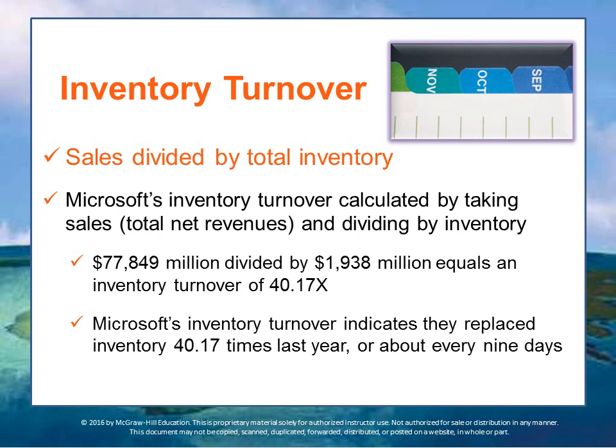Inventory turnover is sales divided by total inventory. This indicates how many times a firm sells and replaces its inventory over the course of a year. A high inventory turnover ratio may indicate great efficiency, but may also suggest the possibility of lost sales due to stock-outs or insufficient stock levels — if you turn over too many times, customers may be trying to buy but there's nothing on the shelves. Microsoft's inventory turnover indicates it replaces its inventory 40.17 times per year, or about every nine days.